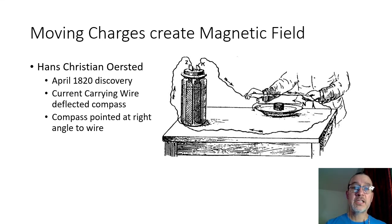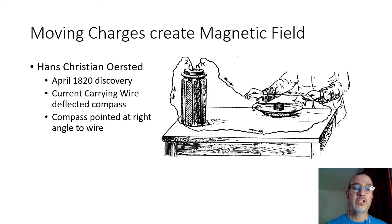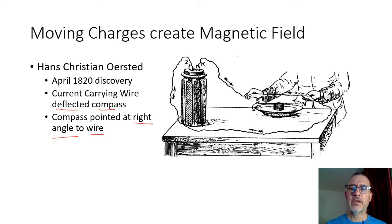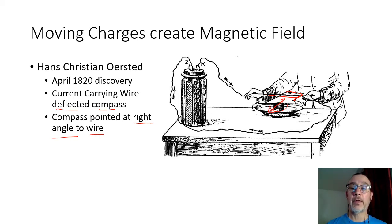He was surprised, his students were surprised. And now, of course, instead of his student who asked the question getting the credit, Ørsted took the credit. So in April 1820, he discovered that a current-carrying wire did deflect a compass placed nearby. And the compass is always pointing at a right angle to the direction of the current. So that was an interesting discovery, and that kicked off our understanding of electromagnetism.